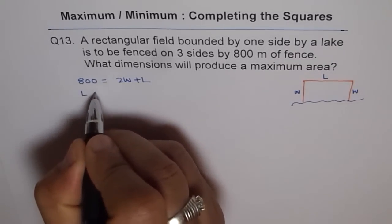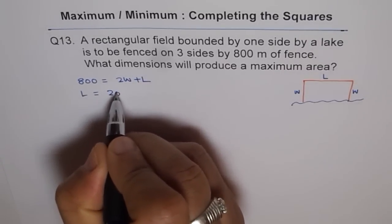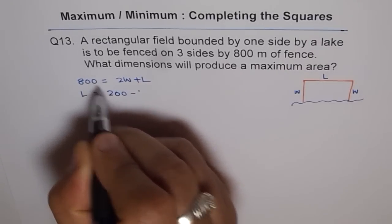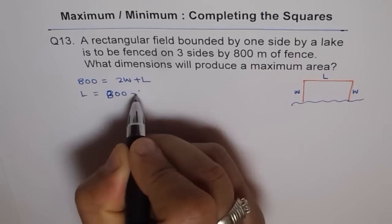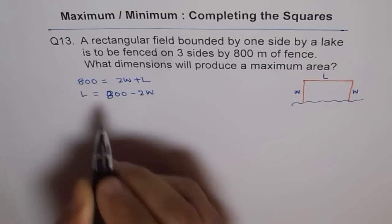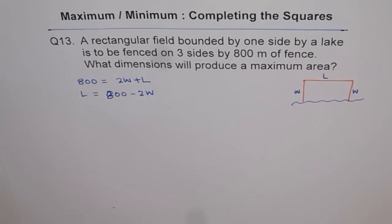Now, from here we can write length in terms of width. So we say length is equal to, sorry, length is 800 minus 2W. So 800 minus 2W is your length.